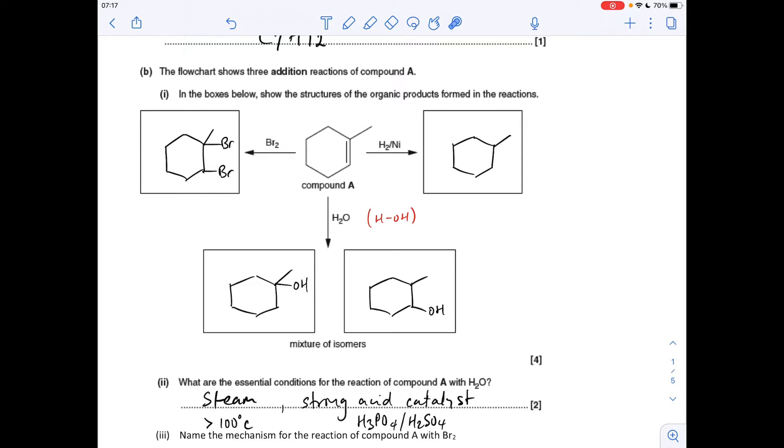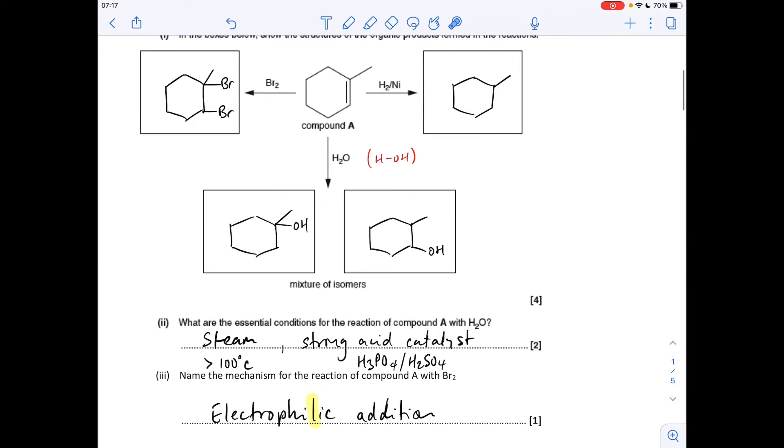The mechanism for the reaction of compound A with bromine is electrophilic addition. I've highlighted that L because I often see a double L there in students' answers, so it's only a single L there.